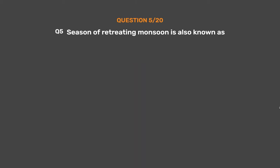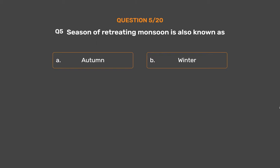Question No. 5: The season of retreating monsoon is also known as — Option A: Autumn, Option B: Winter, Option C: Rainy, Option D: Summer.